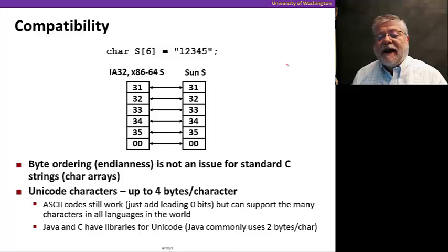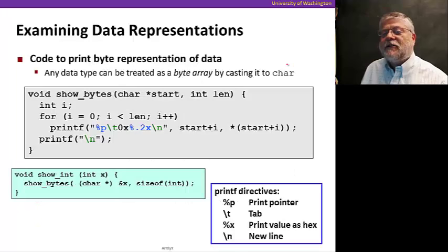Now, later on, we'll learn about Unicode characters that have more bytes per character. Unicode is a newer standard than ASCII that allows us to represent all the character sets around the world, and we need a lot more codes to do that for all the different alphabets that exist. So they can reach up to four bytes per character. Java as well as C have libraries for Unicode. But Java commonly uses two bytes per character. That's sort of its default. We'll see later the complexities of this. But for now, strings are one byte per character.